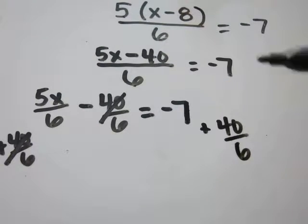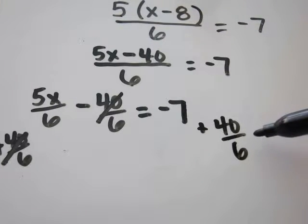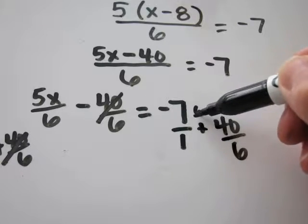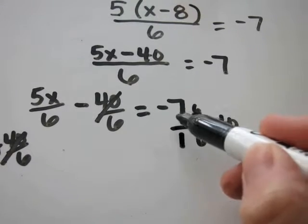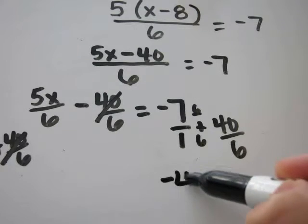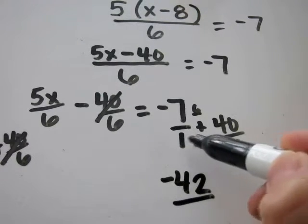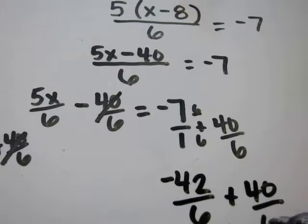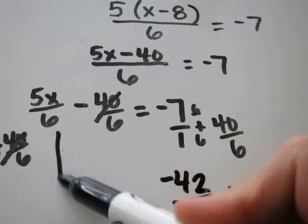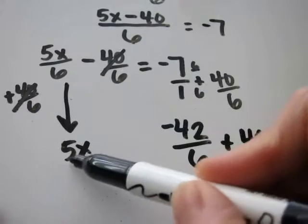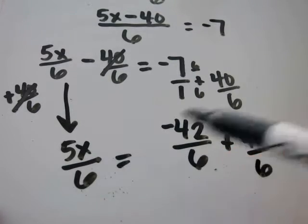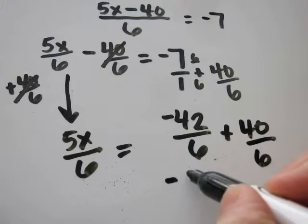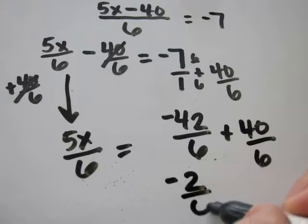Now I'm adding fractions, so I have to have a common denominator. That's going to be 6. This is the same as 7 over 1, so I will multiply 6 over 6. Negative 7 times 6 is negative 42. 1 times 6 is 6. And then just carry this down. It's 5x over 6. Negative 42 plus 40 is negative 2 over 6.